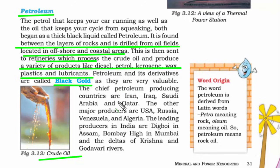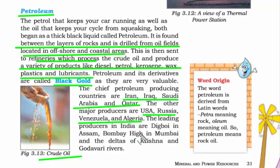Countries that produce petroleum include Iran, Iraq, Saudi Arabia, and Qatar — mostly the Middle East countries. Other producers are USA, Russia, Venezuela, and Algeria. In India, petroleum is found in Digboi in Assam, Bombay High in Mumbai, and the deltas of Krishna and Godavari.